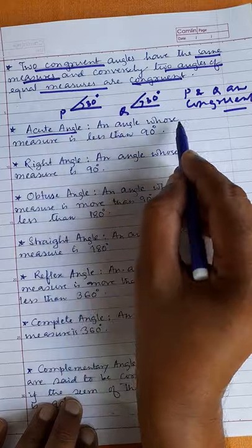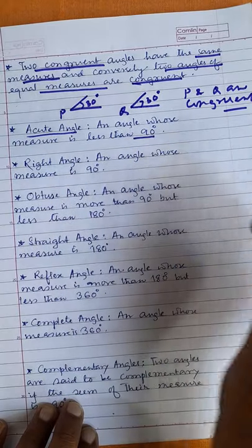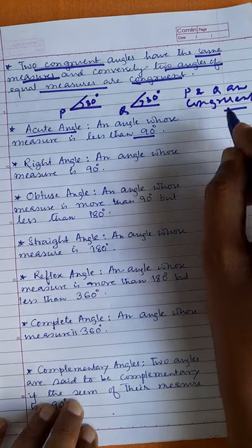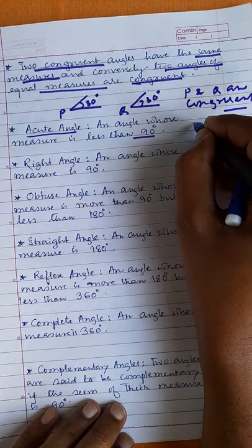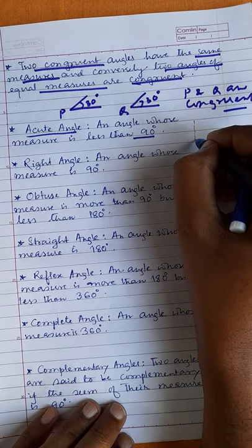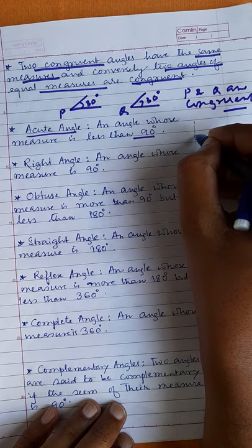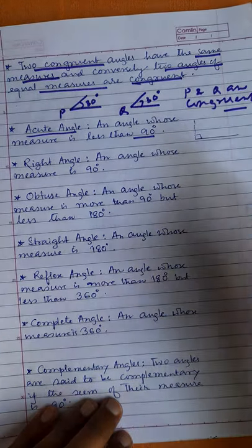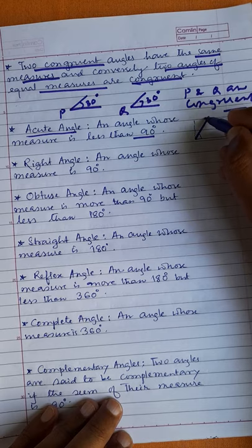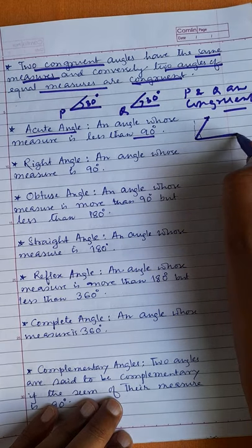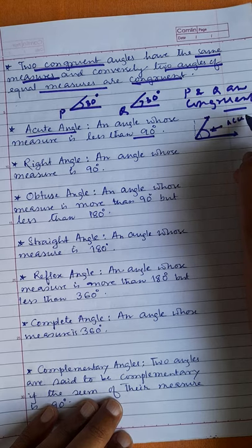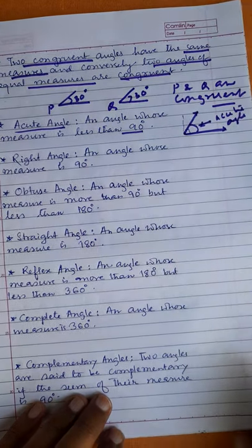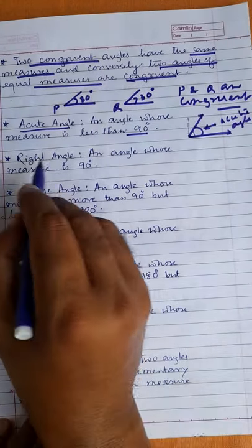Next is acute angle. An angle whose measure is less than 90 degrees is called an acute angle. So whatever angle is less than 90 degrees — this angle is called an acute angle. Then right angle — 90 degrees is known as a right angle.